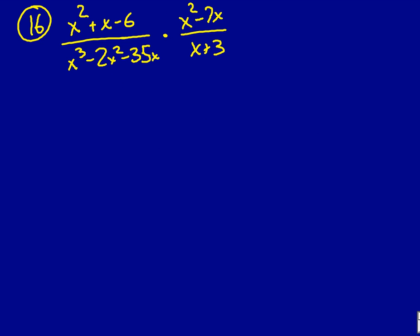So, I need to factor each and every one of these. So, in this first one, factors of 6 that subtract to 1 are going to be 3 and 2. So, an x in each, a 3 and 2, it should be x plus 3, x minus 2. On the bottom, factors of 35 subtracting to 2 are going to be 7 and 5. I need to have it be a negative 7 and a positive 5.